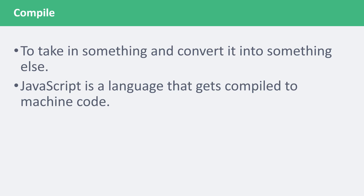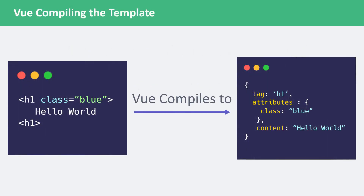Vue does something similar. That begs the question – what is Vue compiling, and why does it need to compile anything in the first place? To answer the first question, Vue is compiling our templates. When we use the mount method, Vue will scan the contents of the original template. This includes the expressions, directives, bindings, and anything else inside of the template. It will take it in as a string and convert it into an object.